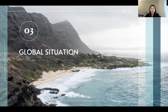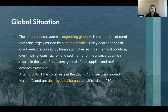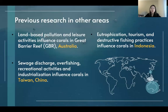The global situation is also analyzed in my paper. In general, the coral reef ecosystem is degrading globally, which is mainly caused by human activities. Around 80% of coral reefs in the South China Sea and around Hainan Island are destroyed by human activities. Three different coral reef ecosystems in the world are also analyzed, including corals in Australia, Taiwan, China, and Indonesia, as shown in the figure.